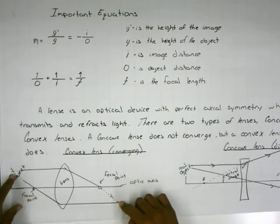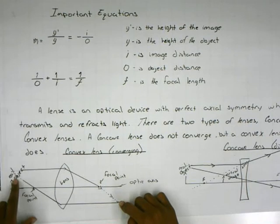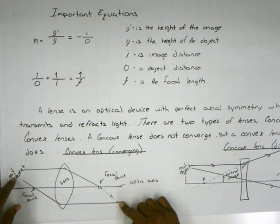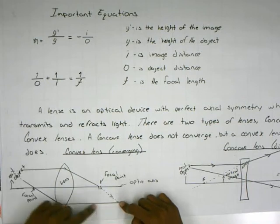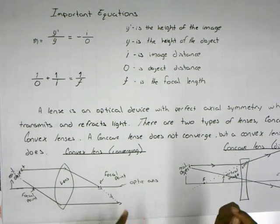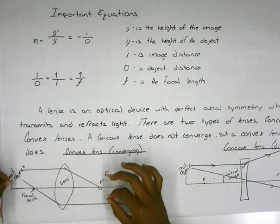It does the same thing in reverse where the ray through the focal point goes to the lens and then parallel to the optic axis. So they meet and converge over here.